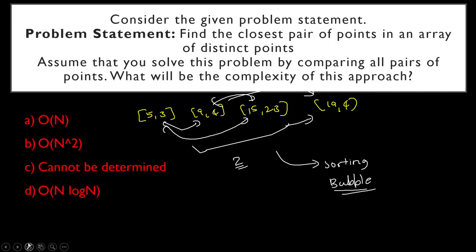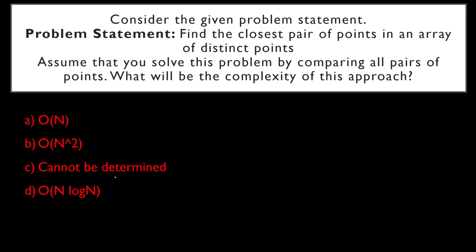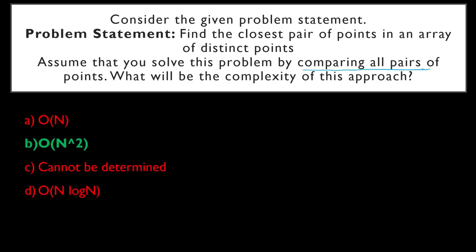The complexity of this problem will be O(N²), because you will have two for loops — one for i from 0 to N and another for j from i to N — which compares every pair of points. Just by reading the phrase 'comparing all pairs of points,' you can determine the complexity is O(N²).